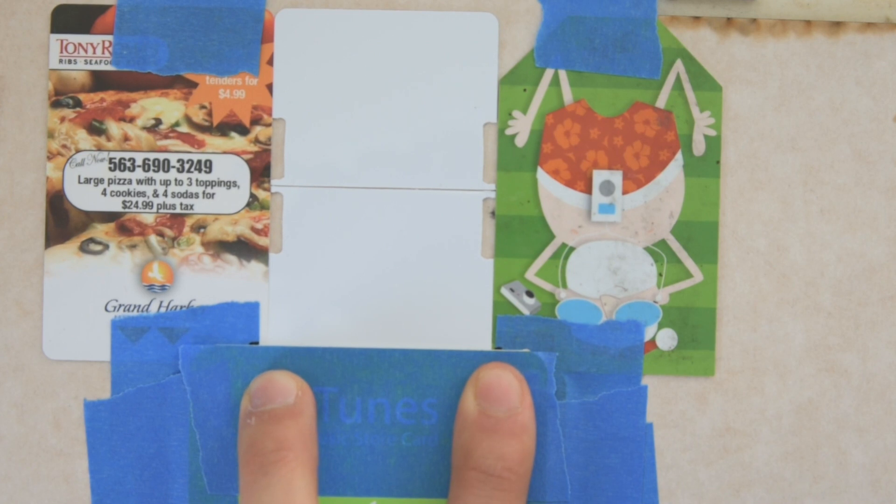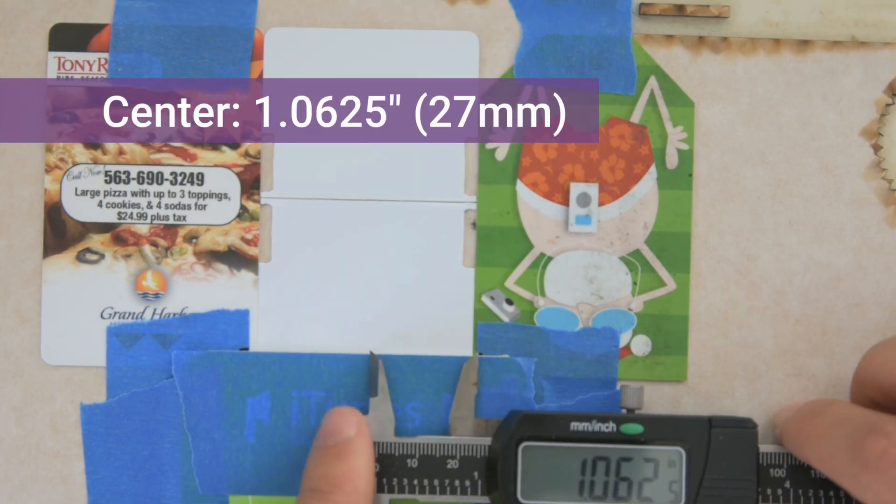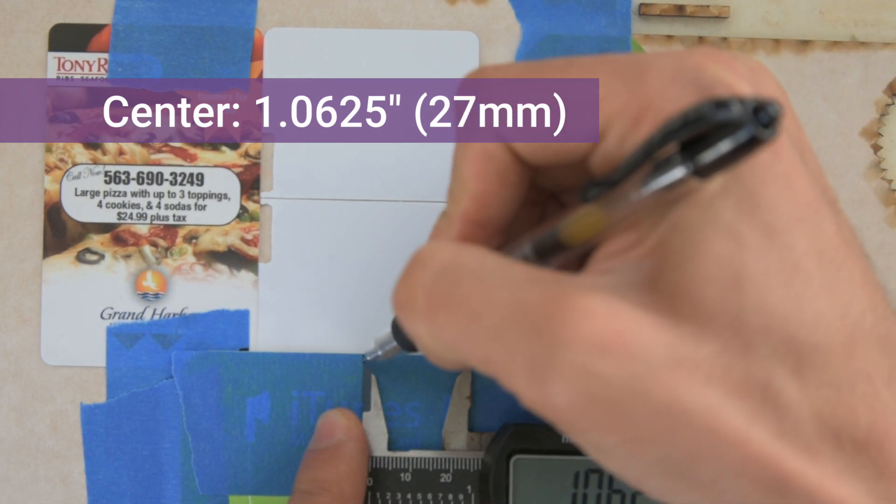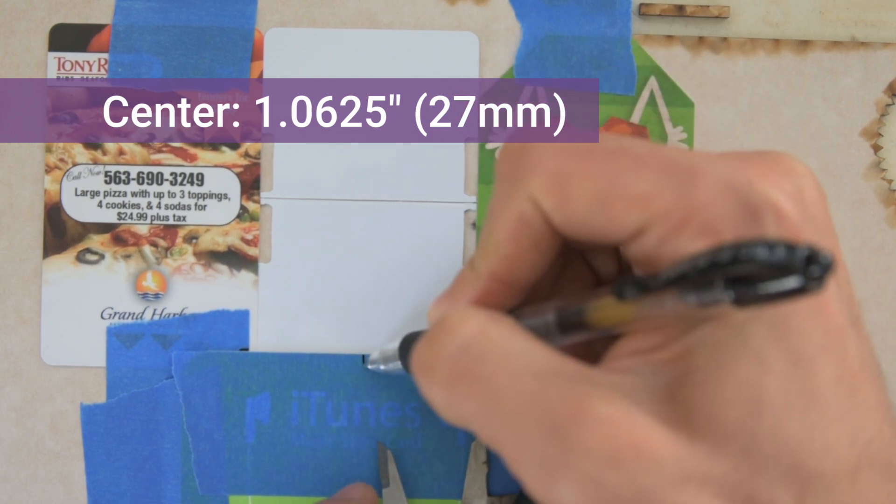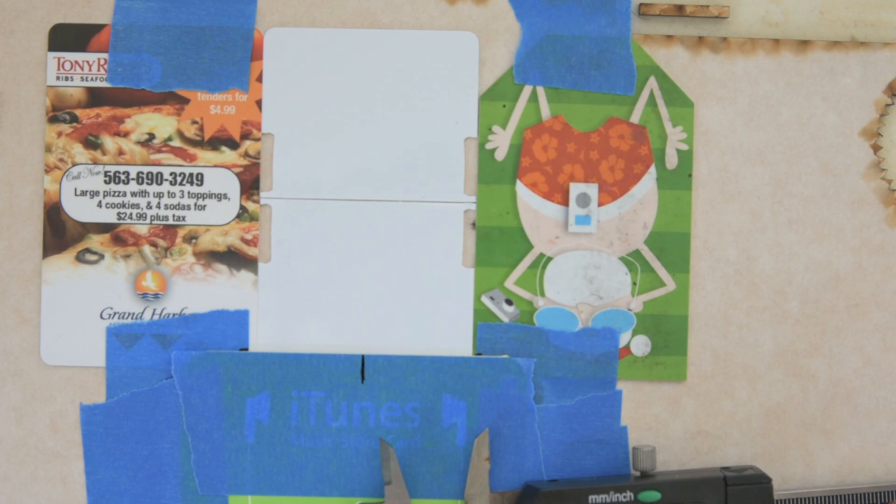And so we're going to start by making a mark in the middle, which is 1.0625. So we'll just go ahead and this doesn't have to be super exact, because we're just using this visually when we're putting those stickers in place.